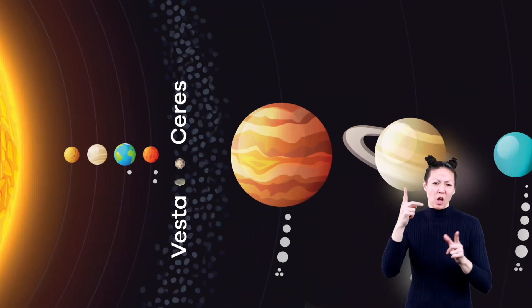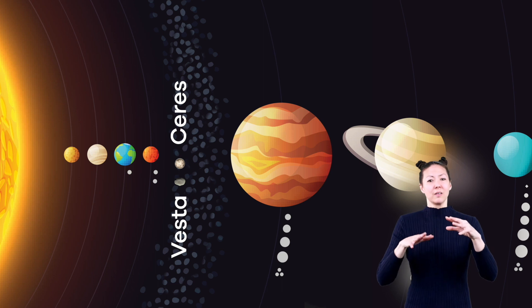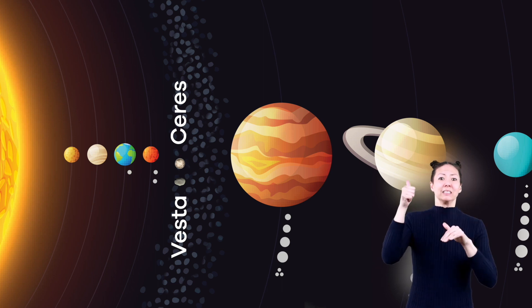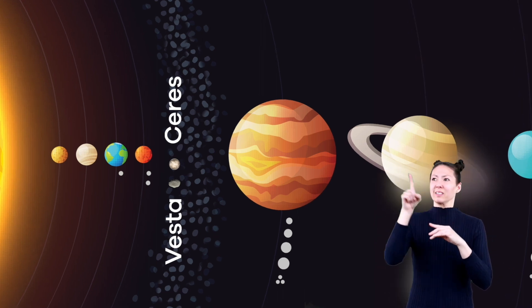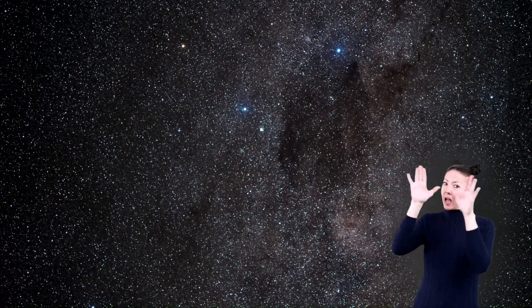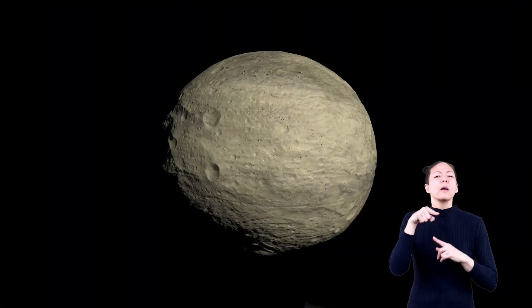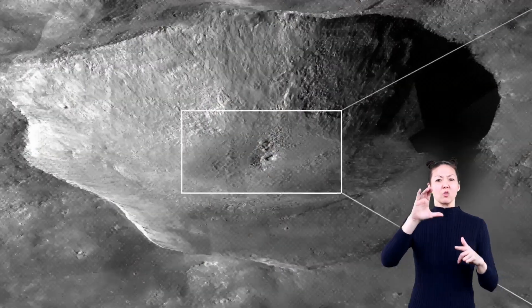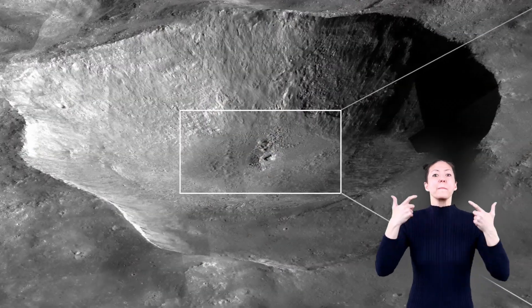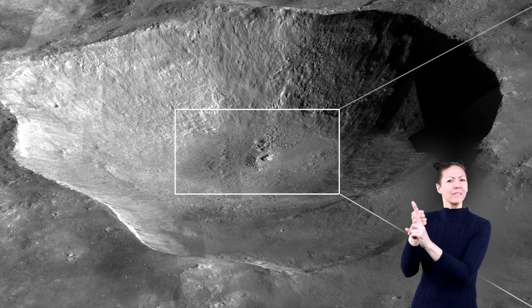Vesta is the second largest object in the asteroid belt. It is also the brightest asteroid in the sky. Vesta can be seen when it's in the right position and if the sky is very dark. One cool thing about Vesta is that it has a giant crater on it that is almost as big as the asteroid itself.